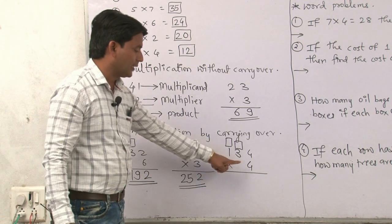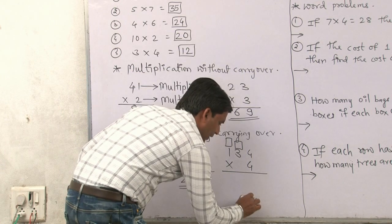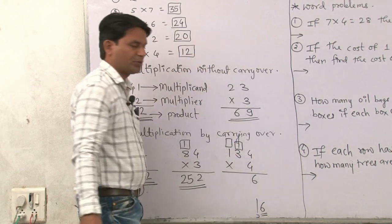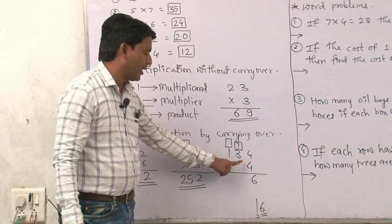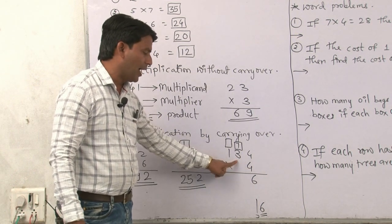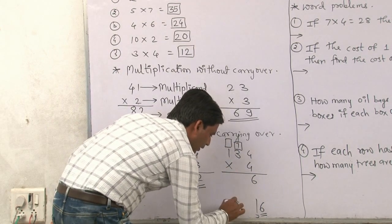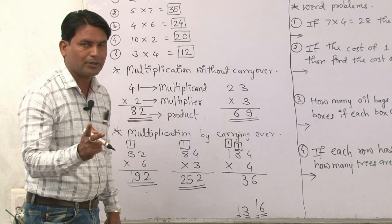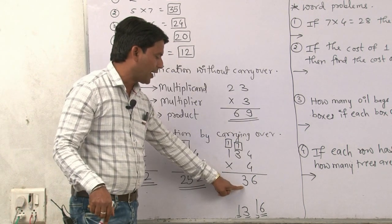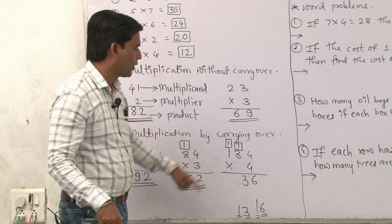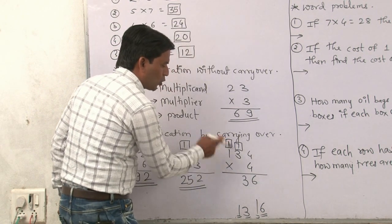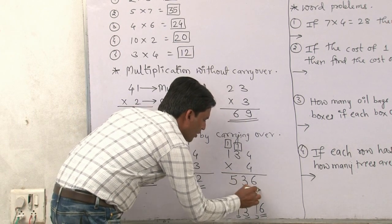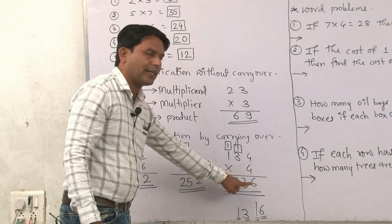Next one: 4 fours are 16 — write 6 here, carry 1. Then 4 threes are 12 plus 1 is 13 — write 3 here, carry 1. When a two-digit number comes, the ones place digit goes below and the tens place digit is carried over. Then 4 ones are 4 plus 1 is 5. So your answer is 536.